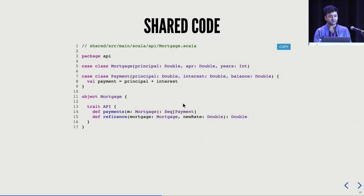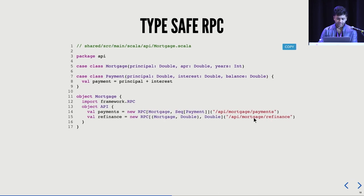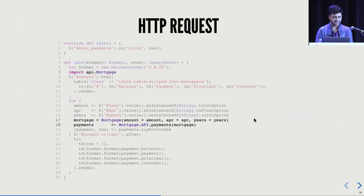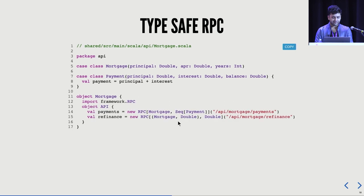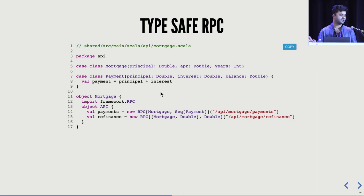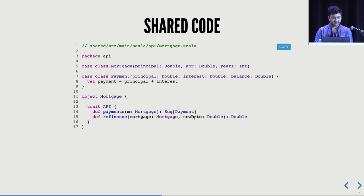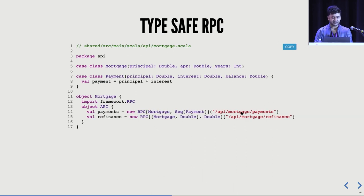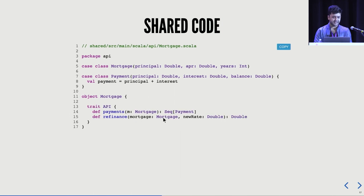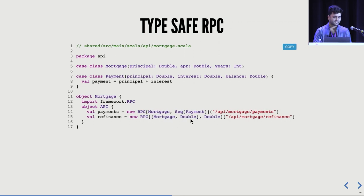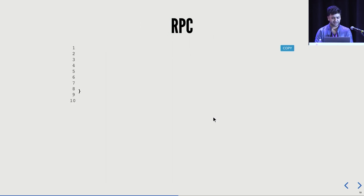This is the shared code. The nice thing about having everything in Scala is you can share your back-end and front-end models. I have a mortgage class and a principal class. This is my API — I have two APIs: a payments API which takes in a mortgage and returns a sequence of payments, and a refinance API which takes in a mortgage and a new rate and tells me how much penalty I should be willing to pay to go for the new rate. But obviously we have to rewrite it using framework.RPC to actually make AJAX calls. The RPC is about 40 lines of code.